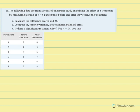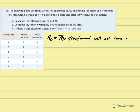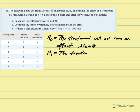We'll begin by stating our research and null hypothesis. This example is not specific in terms of what we're testing. Nonetheless, we can write our null hypothesis simply to state that the treatment will not have an effect, and our notation would be that the average mu difference is equal to 0. The alternative hypothesis would say that the treatment will have an effect, and the average mu difference would not equal 0.